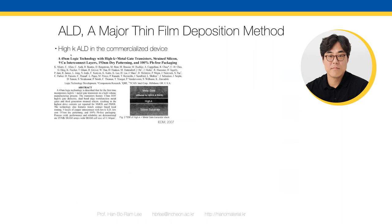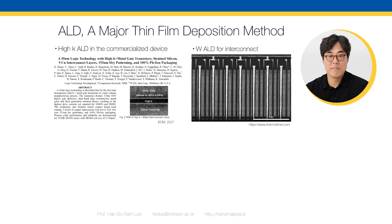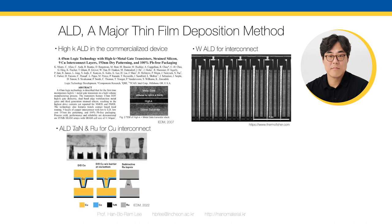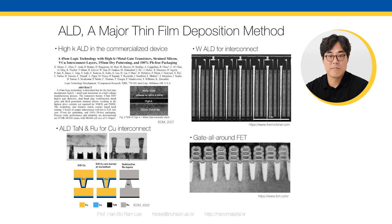ALD became a major thin-film deposition method for silicon device fabrication. The first commercialized ALD process for transistors was adopted by Intel in 2007 — they used ALD to deposit the high-k material hafnium oxide. Now, in the cross-section image of NAND devices, all the white-contrast tungsten plugs are deposited by tungsten ALD. All the interconnects are deposited by tungsten ALD. They also used ALD tantalum nitride and ruthenium for copper interconnects, with tantalum nitride as the seed and barrier layer for the copper dual-damascene process — this is a commercialized ALD process.